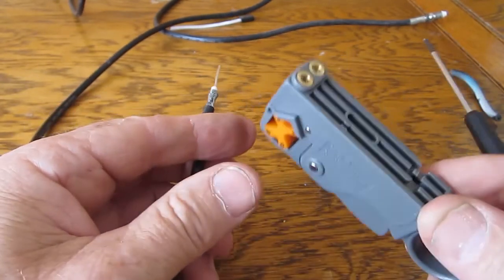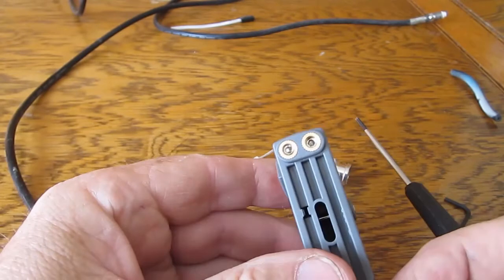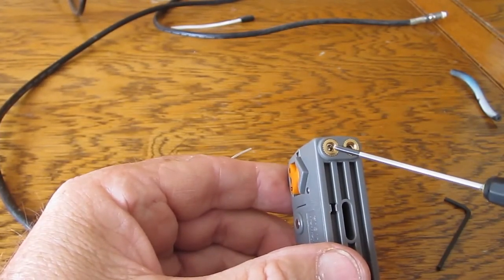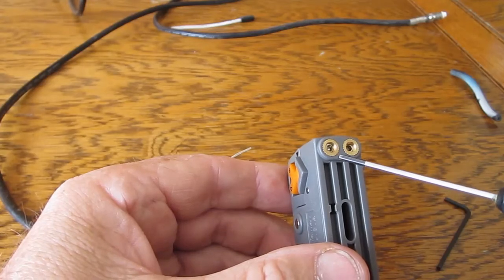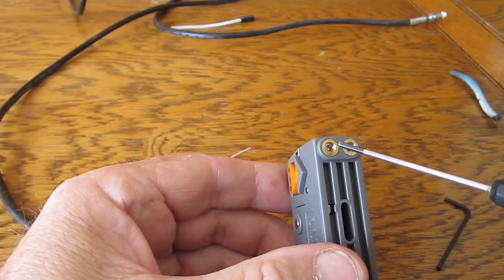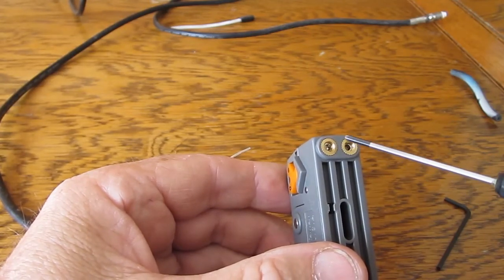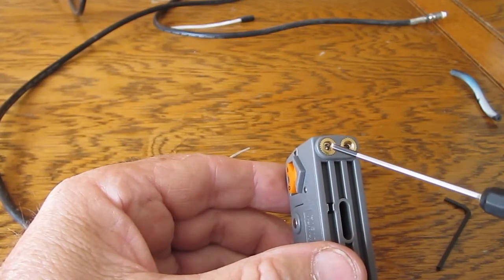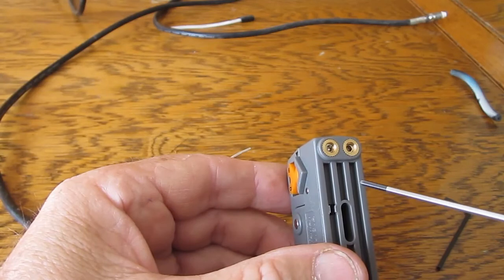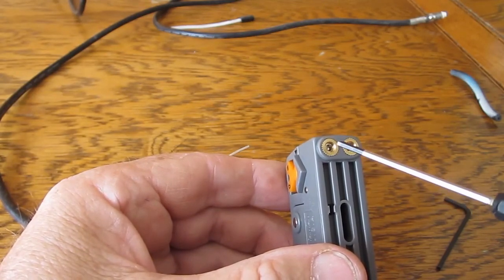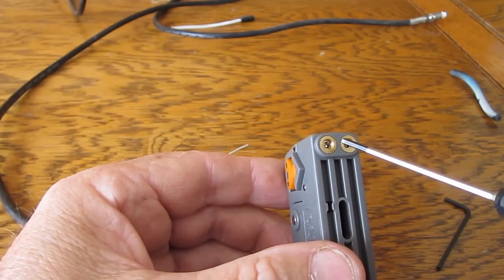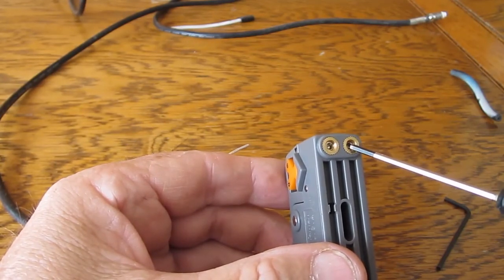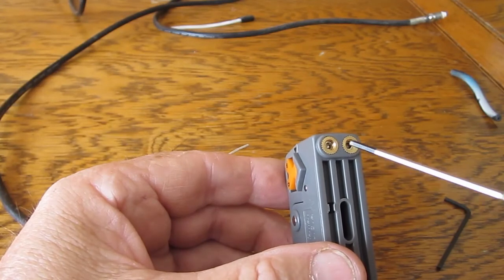Now once you've got your tool set up, one recommendation I can make is put a little drop of almost anything, a little drop of glue, or the other one is I've got some fishing rod lacquer for replacing the bindings on fishing rods. Put a little drop of something like that just on these two threads to stop these two from moving.